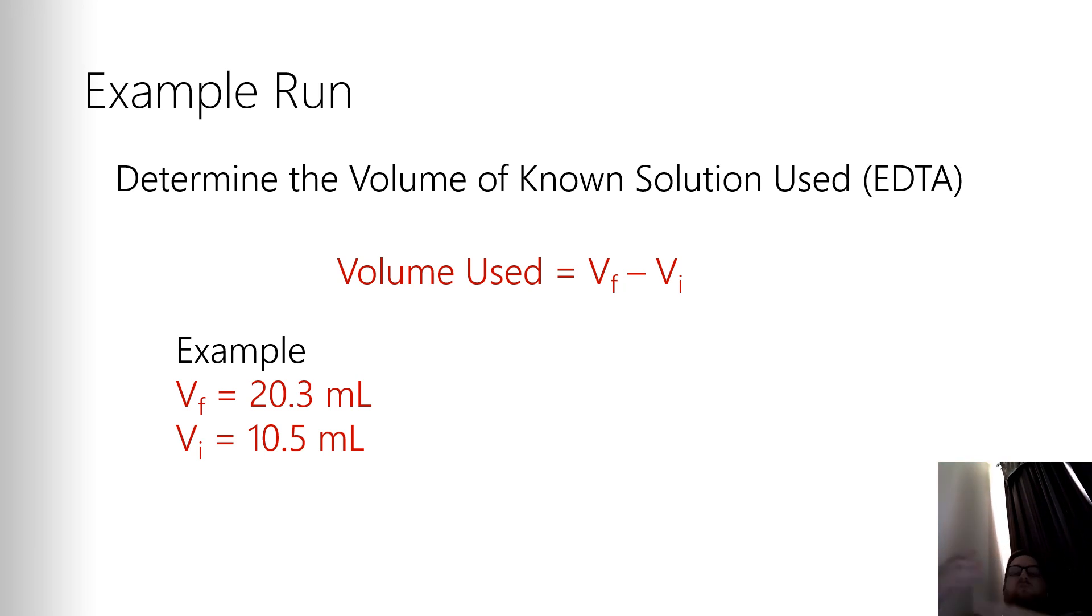Because remember, this graduated from 0 down to 50, so my initial value will be smaller than my final value. So if I have 20.3 as my final and 10.5 as my initial, it's a simple calculation to figure out that the volume I used was 9.8 milliliters. So this tells me how much of the known solution I used to titrate the 25 milliliters of the unknown.